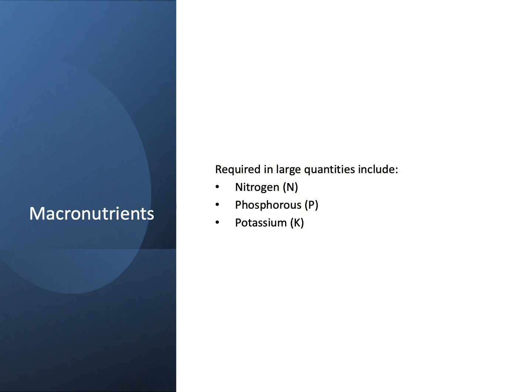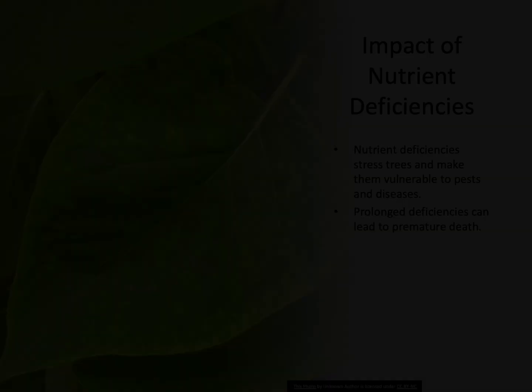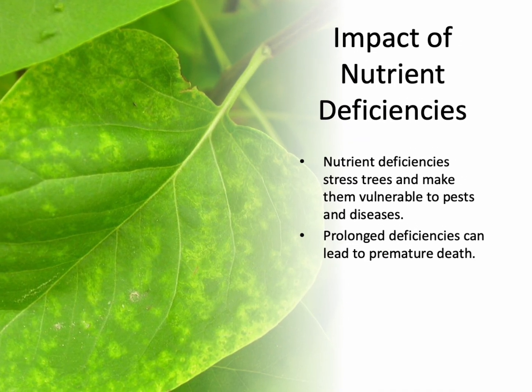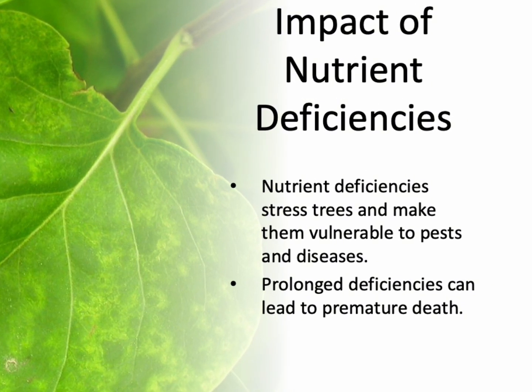Trees require macronutrients like nitrogen, phosphorus, and potassium in large quantities. Secondary macronutrients include sulfur, magnesium, and calcium — the tree needs these in moderate quantities. Nutrient deficiencies can harm a tree's ability to function properly; unchecked deficiencies stress trees, leaving them vulnerable to other issues.